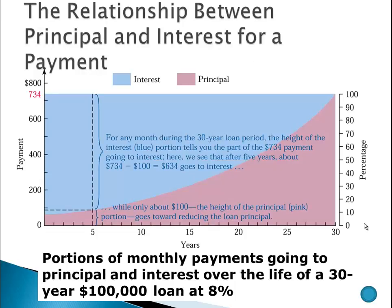Just a little bit of background on interest and payments. I found this nice graph here — it's a really wonderful graph. The $734 is our payment that we're making each month. Over that 30-year period, the blue area here vertically represents the amount of interest we would pay for that $734 payment throughout the time period. What we see with the dotted lines is that in year five, most of that $734 payment is actually going towards interest, with only a little bit going towards reducing the balance of the $100,000.